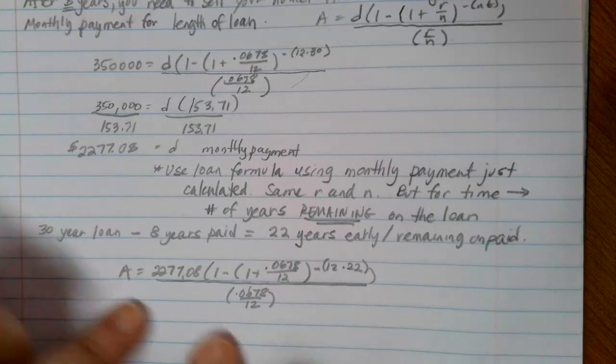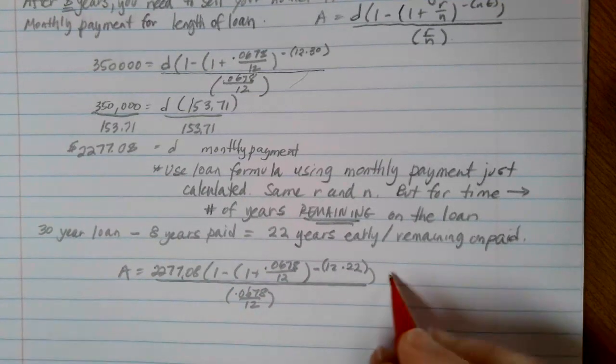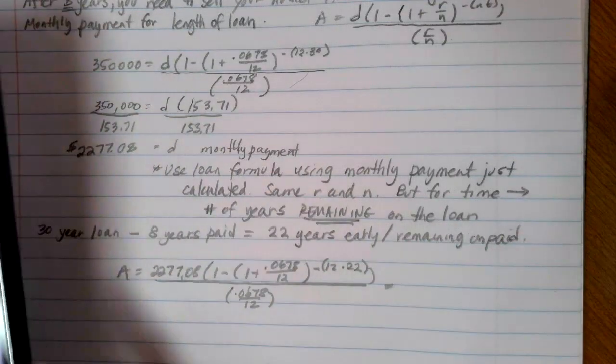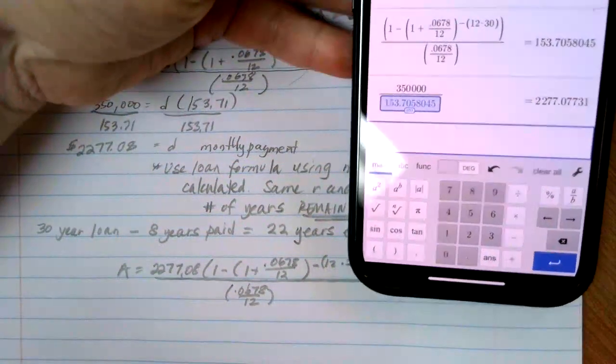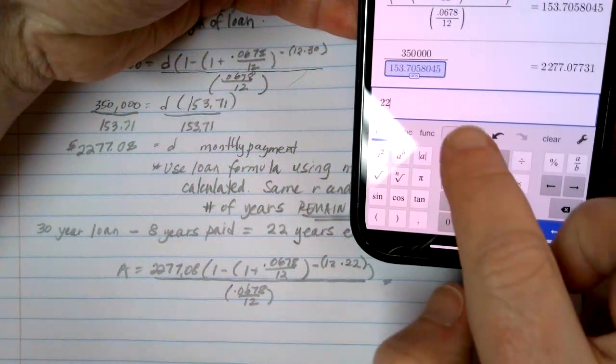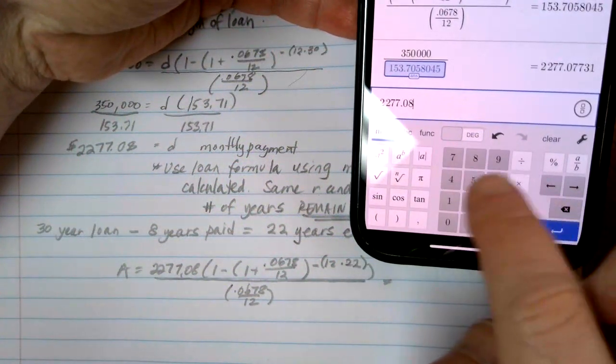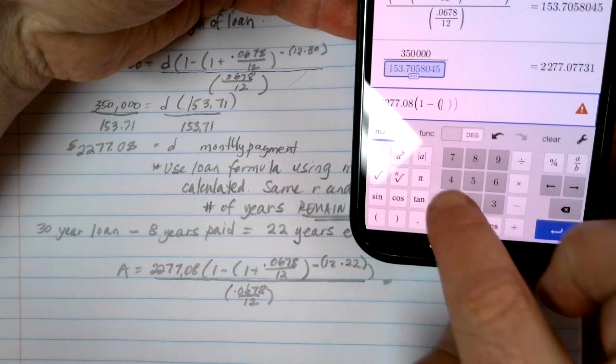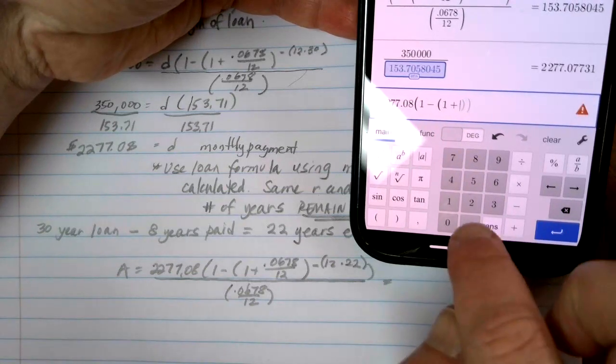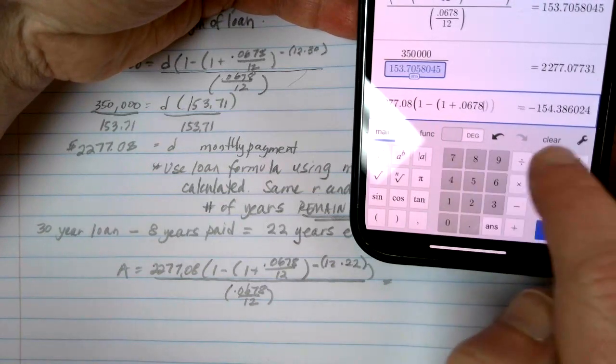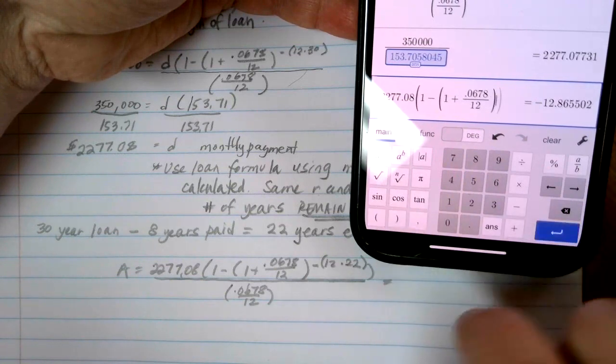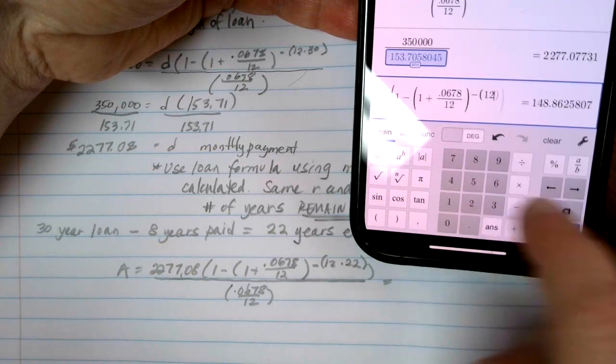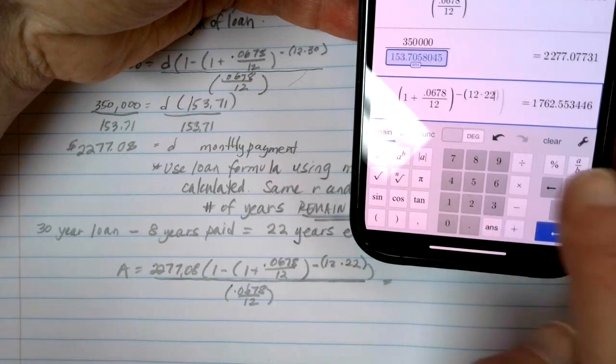All right, this is the A is by itself. So all I have to do is plug all this information into Desmos on my calculator and figure out what is the value remaining. So let's go ahead and do that. So here we're going to start with 2277.08. We're going to times that by 1 minus parentheses 1 plus 0.0678 over 12. Close the parentheses. Take it to the negative 12 times 22 years remaining.